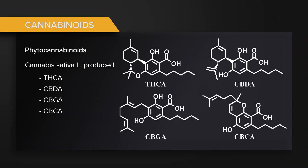Cannabinoids are a very broad chemical term, so I'll focus on phytocannabinoids first. These predominant ones are the ones being produced from cannabis sativa L. I've got four here on this slide: THC acid, CBD acid, CBG acid, and CBC acid. These are the molecules that the plant makes.